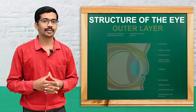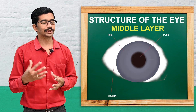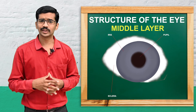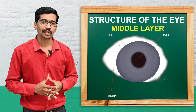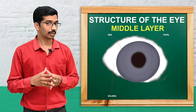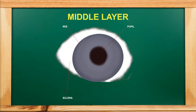Now we will move to the middle layer. The middle layer of the eyeball is the choroid, which is rich in blood vessels and is dark brown in color. The anterior part of the choroid is the ciliary body.